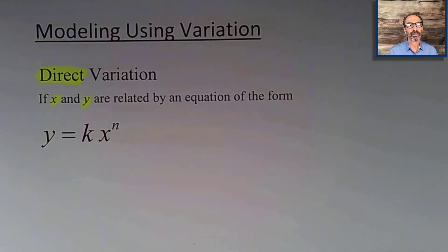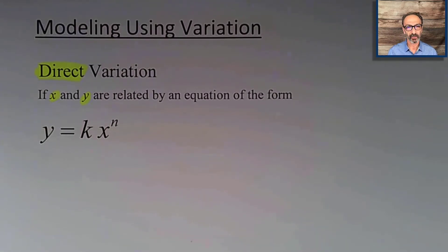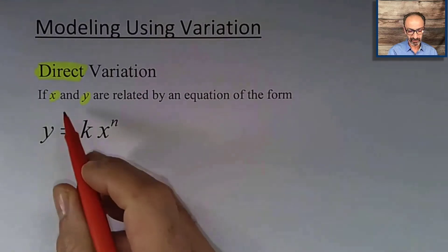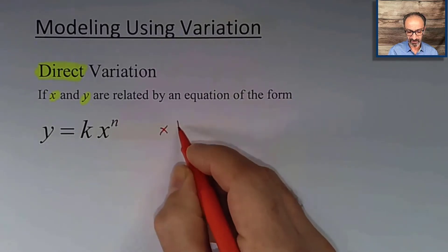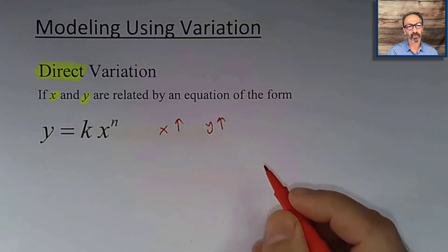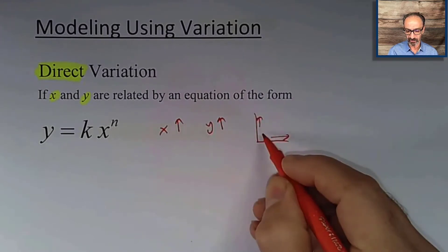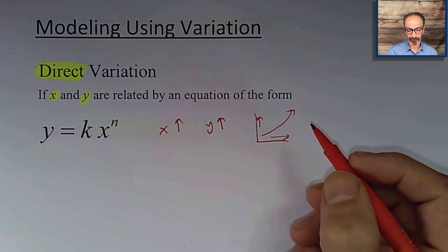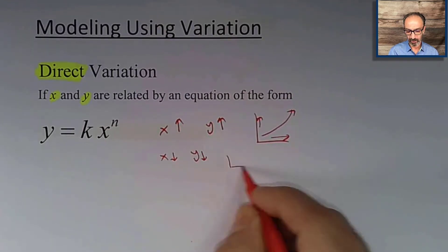Hi, welcome to my channel. I'm going to go over variation: direct variation, inverse variation, and joint variation. For direct variation, if x and y are related by an equation of the form y equals k multiplied by x to the power n, we say that we have a direct variation. As x to the power n increases, y increases — that's called direct variation. Graphically, as x increases, y increases, so the graph is going to be going up. If x goes down in values, y will go down, and that is still direct variation.